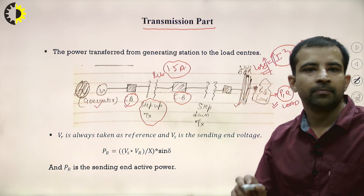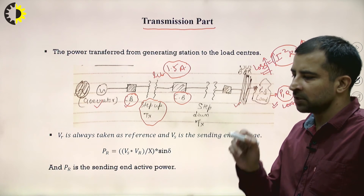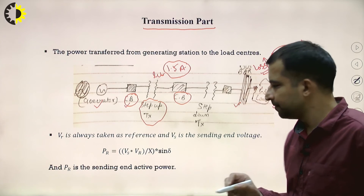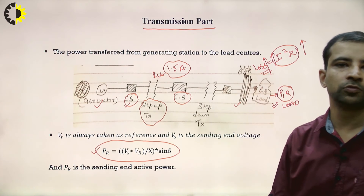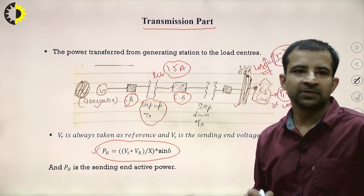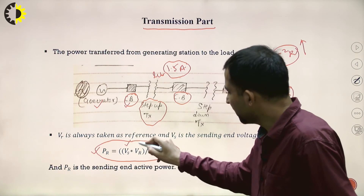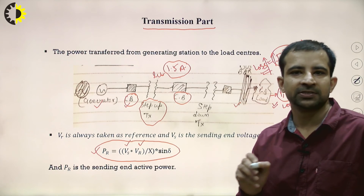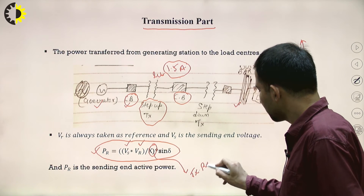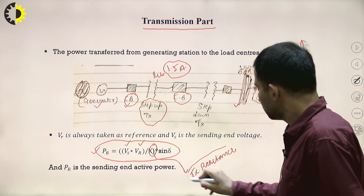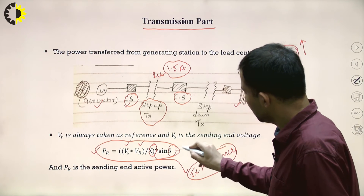An important equation gives an overview of transmission line losses: PR = (Vs × Vr / X) × sin δ, where Vs is the sending-end voltage, Vr is the receiving-end voltage, X is the reactance of the transmission line, and δ is the load angle. The load angle will be studied in detail in the context of synchronous machines.